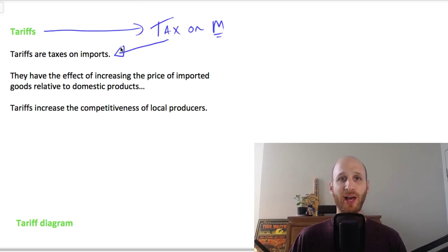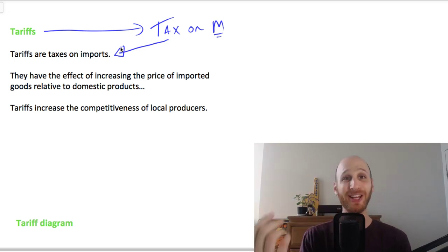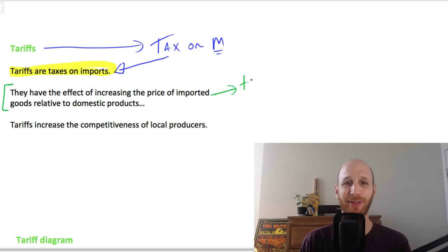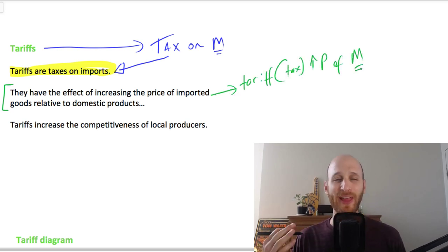So if Australia wants to protect its local pen industry, it might put a tax on pens coming from America. The impact of a tariff is to increase the price of imports because it's a tax, and that's relative to domestic products.